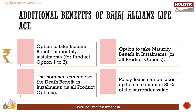Other additional benefits of Bajaj Allianz Life IS include: option to take income benefit in monthly installments for product options one, two, and three; option to take maturity benefit in installments under all product options; nominee can receive the death benefit in installments under all product options; and a policy loan can be taken up to a maximum of 80% of surrender value.